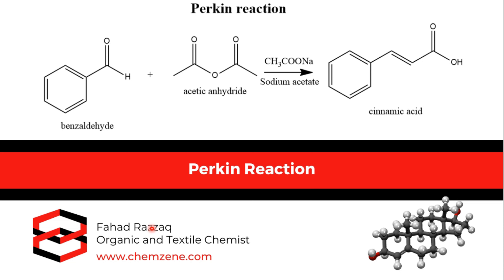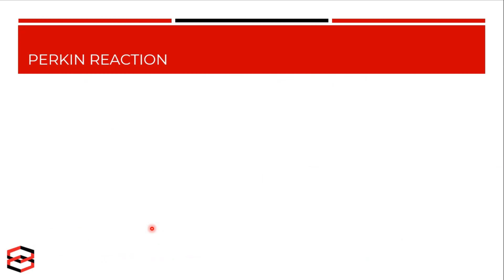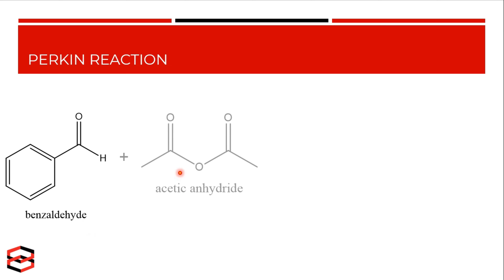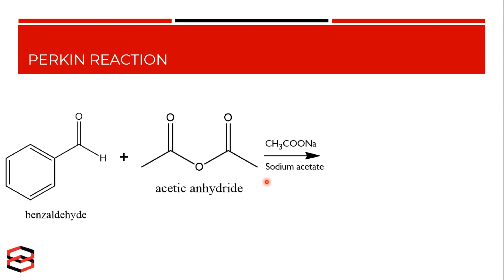This reaction was developed by Perkin and is used to make cinnamic acid by aldol condensation of an aldehyde and an acid anhydride in the presence of the alkali salt of an acid. Aromatic aldehyde, which is benzaldehyde, is treated with anhydride, which is acetic anhydride, in the presence of its salt, which is potassium or sodium salt.